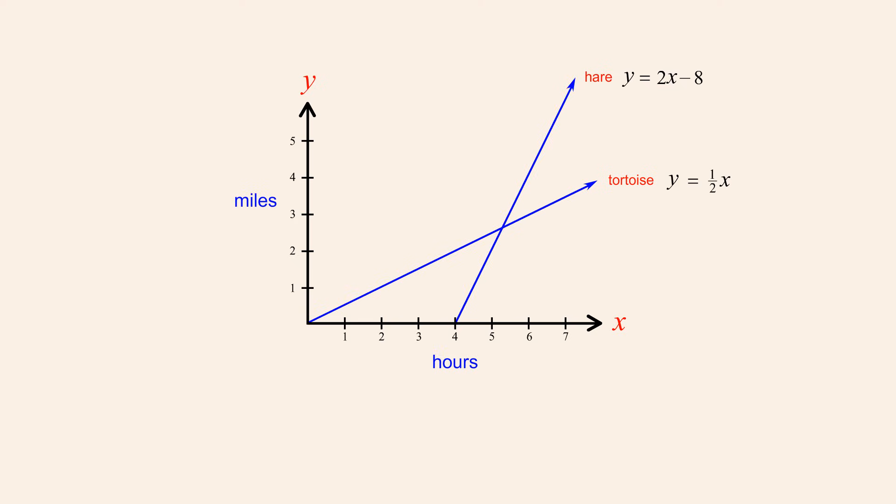Any point which lies on both graphs therefore represents a solution to both equations. We can find this intersection point if we find values for x and y which simultaneously satisfy both equations.